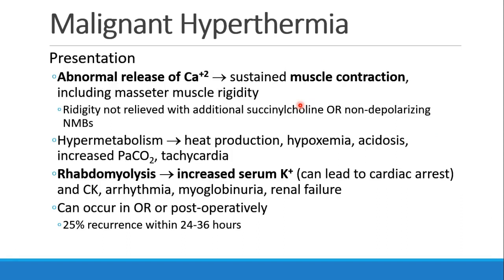When patients have malignant hyperthermia, what's happening is calcium is being released abnormally from inside the muscle cell, leading to a sustained constant muscle contraction. Often people notice masseter muscle rigidity in the jaw. Even if you gave more succinylcholine — which would be a terrible idea — or even rocuronium, the rigidity will continue because the problem is not at the neuromuscular junction; it's inside the muscle cells.